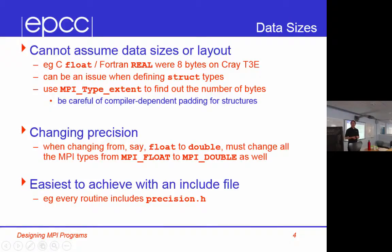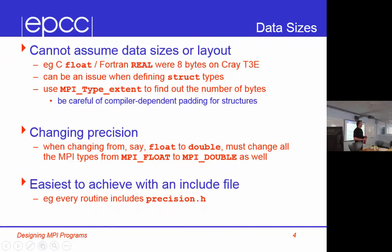Another bugbear of mine is changing precision. People often write their code using floats and then someone says you should be using double precision, and they use a magic compiler flag to promote all variables. Well, then you write an MPI program and you're sunk, because all your MPI routines have an explicit MPI float. So you need to change all your floats to doubles. Don't rely on magic compiler flags to fix a broken code — go in and fix it.